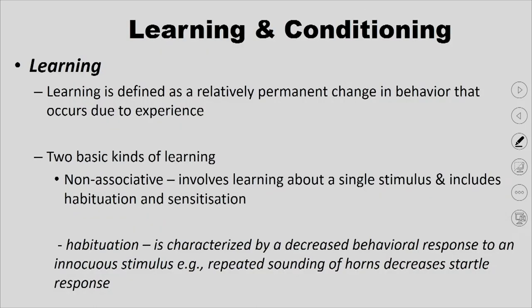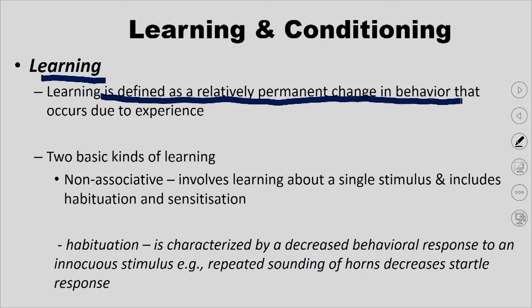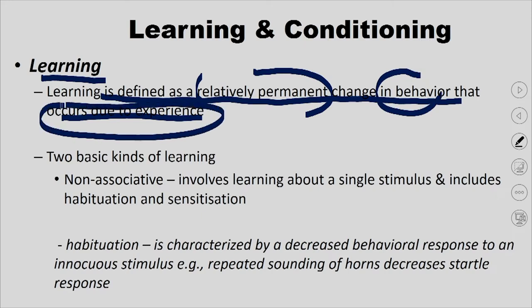Learning is defined as a relatively permanent change in behavior that occurs due to experience. Let us break this definition. The first part — relatively permanent change — means the change seen in people's behavior is not permanent, so the change in behavior which happens due to learning can always go back to the original behavior.